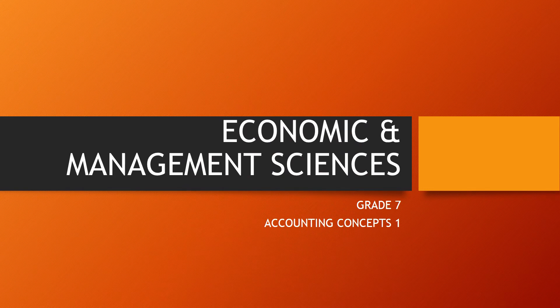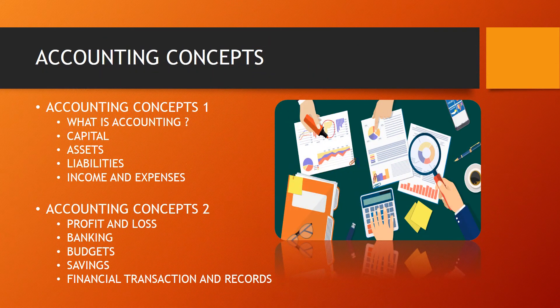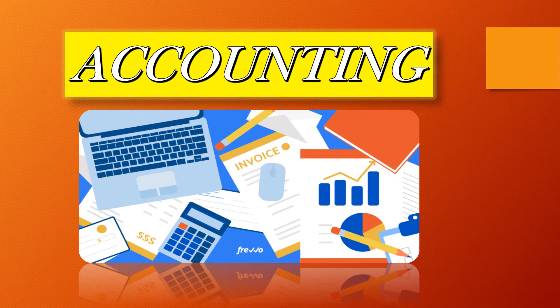Economic and Management Sciences Grade 7 Accounting Concepts Video Number One. In Grade 7 we look at the following accounting concepts: assets, liabilities, capital, income, expenses, profit, loss, banking, financial transactions, financial records, savings, and budgets. Due to the number of concepts to be covered, there are two videos. The first video covers accounting, capital, assets, liabilities, income, and expenses. The second video covers profits and loss, banking, budgets, savings, financial transactions, and financial records.